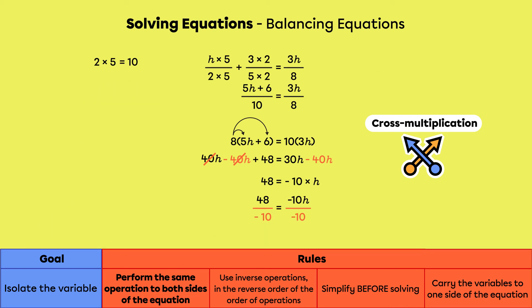On the left side, when dividing a positive number by a negative number, the result will be negative 4.8. On the right side, negative 10 divided by negative 10 gives 1. So negative 4.8 is the value of the variable h.